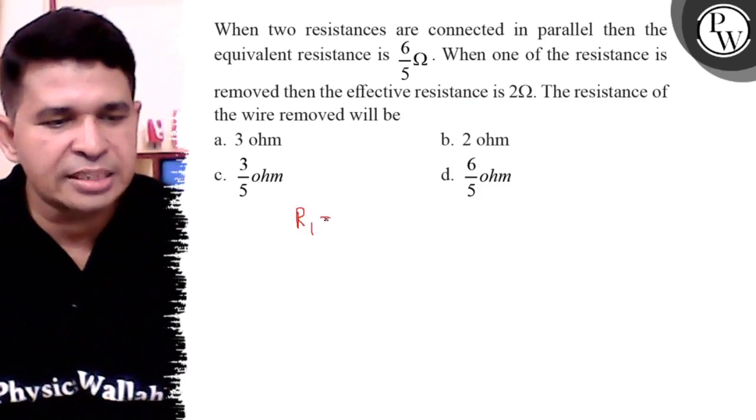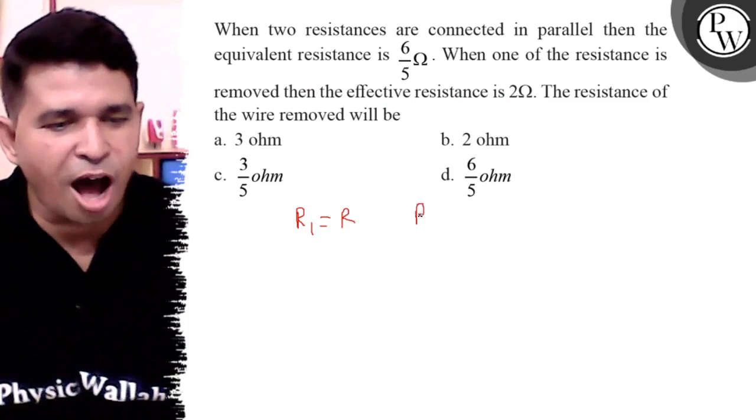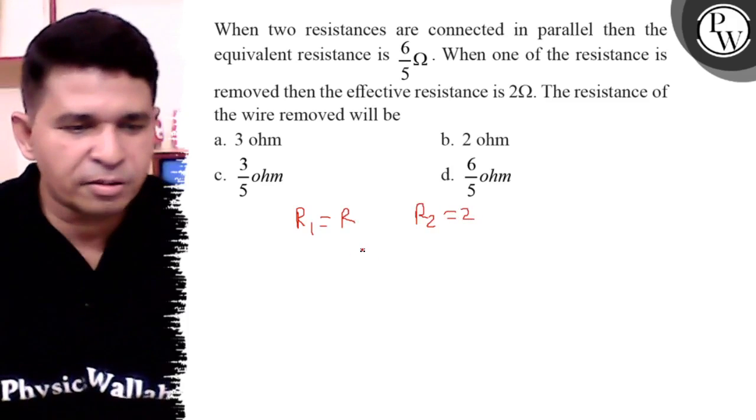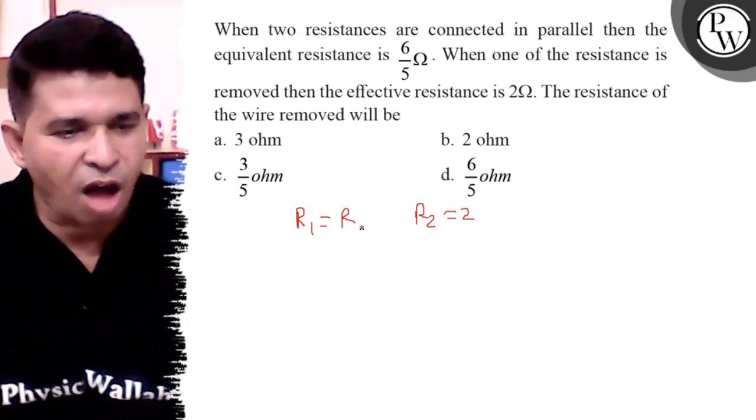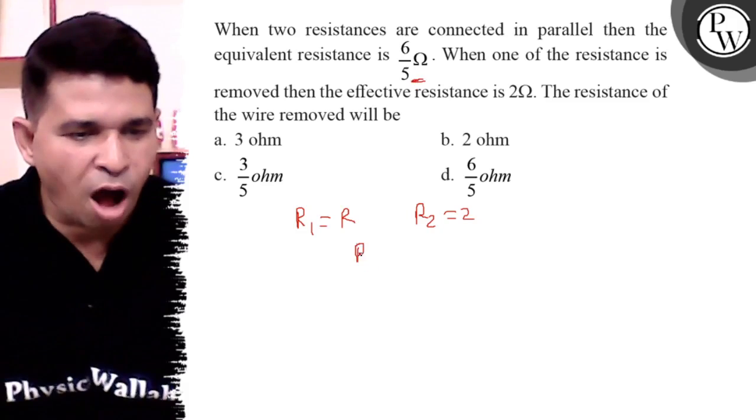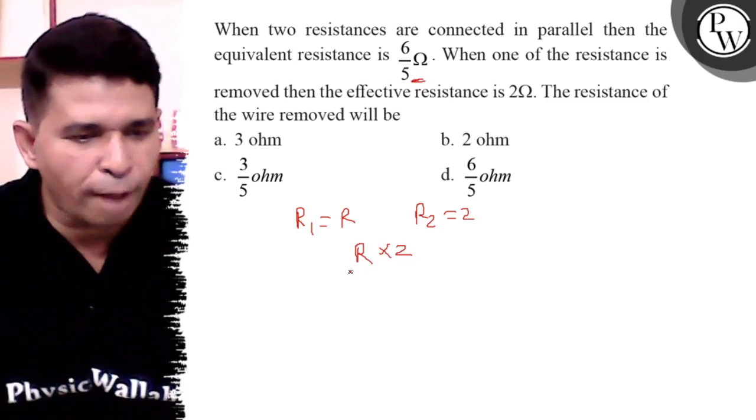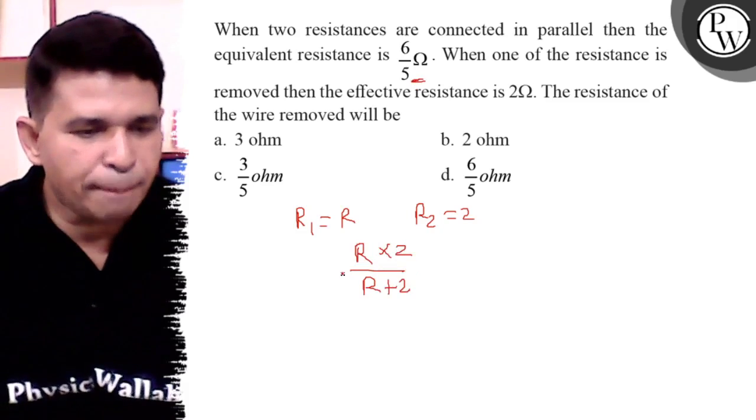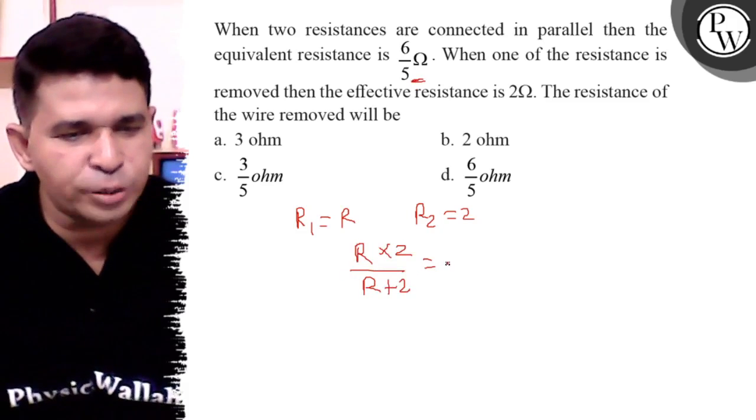So R1 is R and R2 is given as 2 ohm. The combination of R and 2 in parallel is given as 6/5. So R times 2 upon R plus 2 is the parallel combination of R and 2.